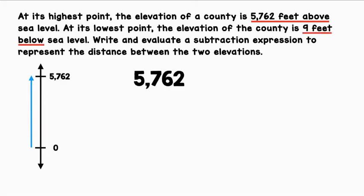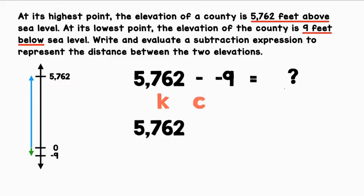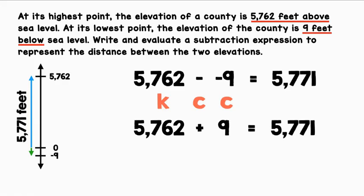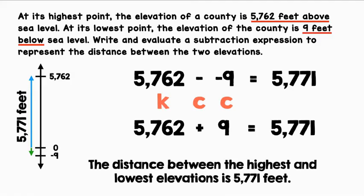The lowest point is 9 feet below sea level. Since we are calculating the distance, we will subtract, and since the lowest point is below sea level, we will use negative 9. That will give us the distance between the highest and lowest points. Let's keep 5,762, change subtraction to addition, and change negative 9 to positive 9. 5,762 plus 9 equals 5,771. The distance between the highest and lowest elevations is 5,771 feet.